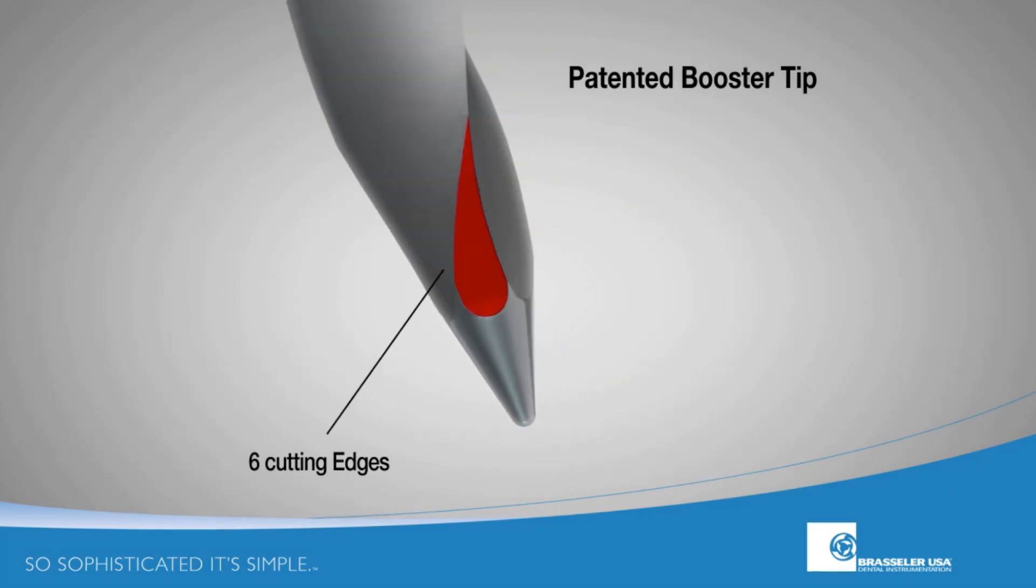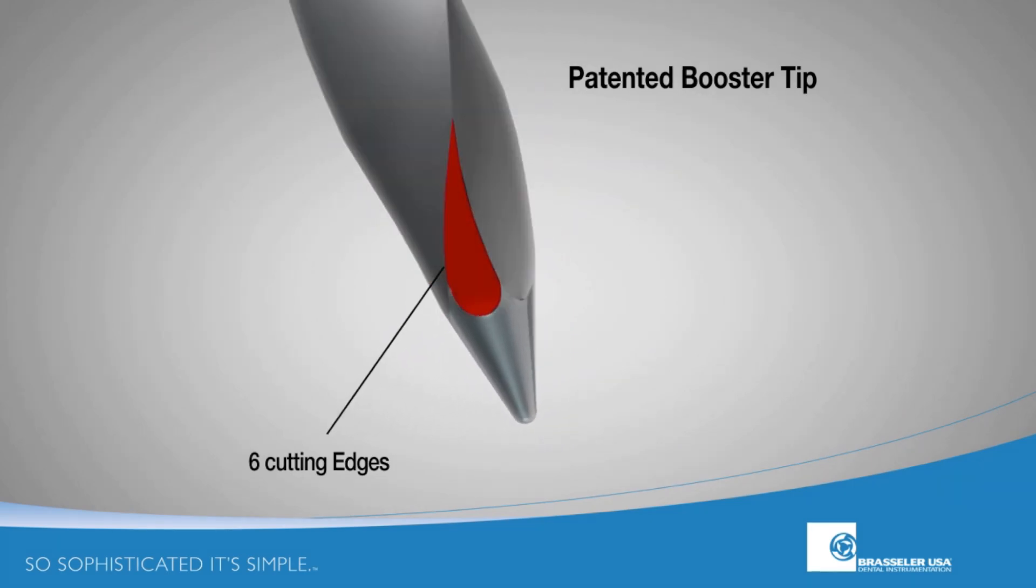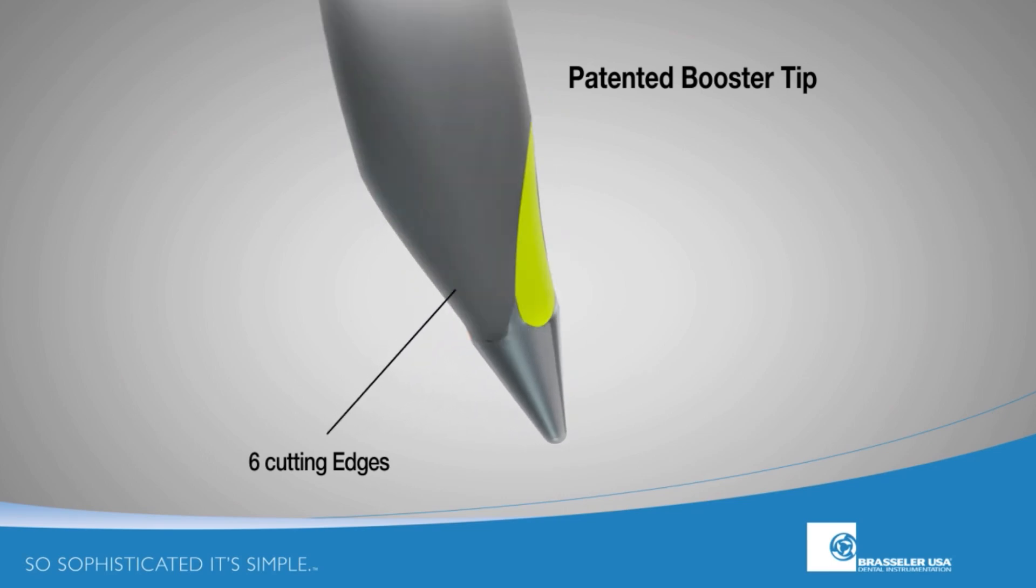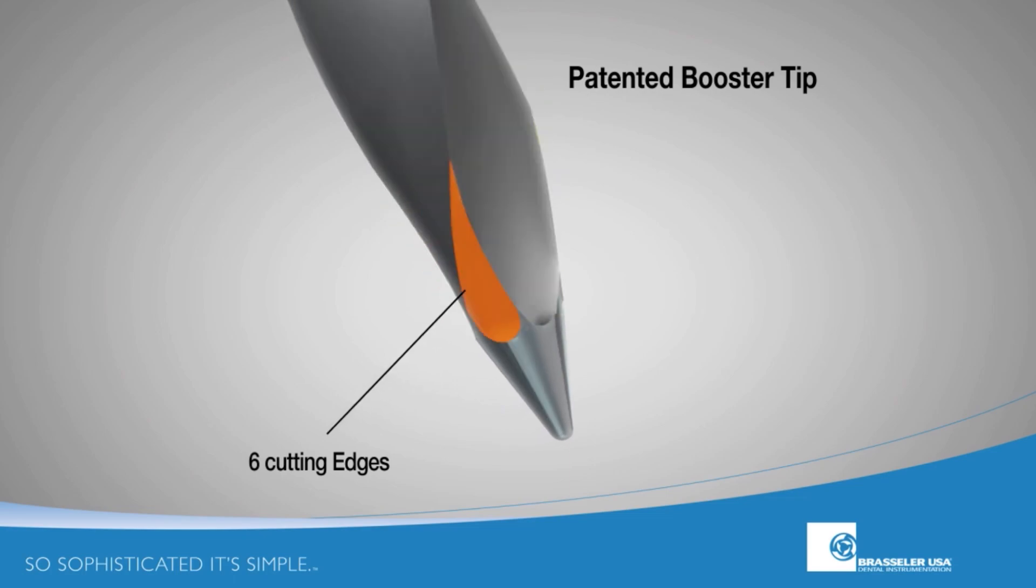You can see here the areas that have been colored in this animation by the manufacturer show that these areas help propel the file and not cut on the sides in that area, which will help guide the tip.